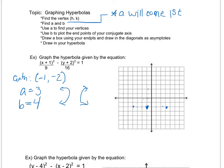And then I'm going to use the b to draw my conjugate axis. Go up 1, 2, 3, 4. Go down 1, 2, 3, 4.